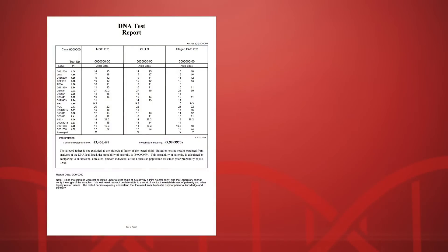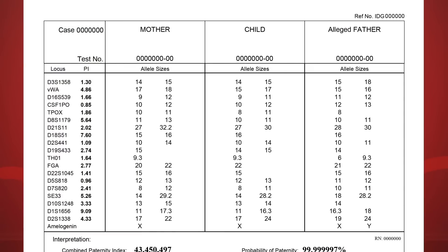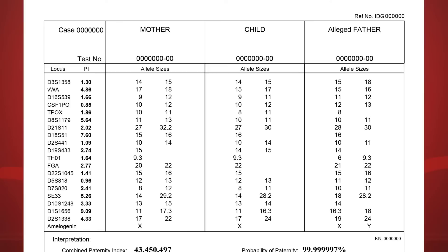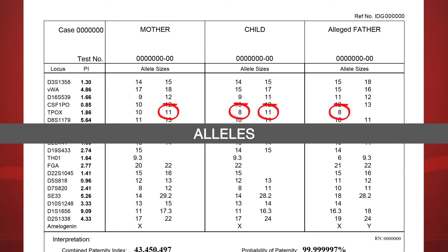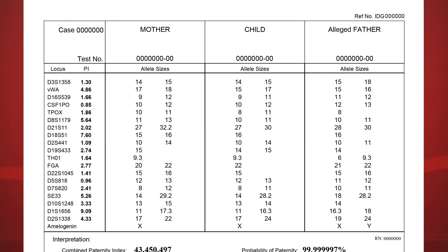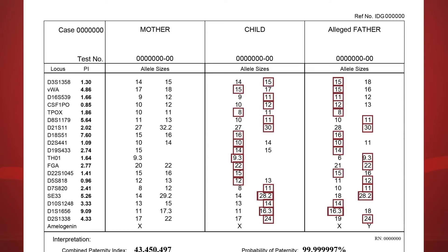The Genetic System Table contains all the data results in the report. DDC tests at least 20 different DNA locations, listed in the locus column, and then compares the data with the same locations for other tested parties. A child inherits one copy of this DNA segment from the mother and one from the father. These segments are called alleles. The number associated with each allele represents the length of the DNA segment. Where the man tested is considered the biological father, the possible father and the child must match one allele at each genetic location.